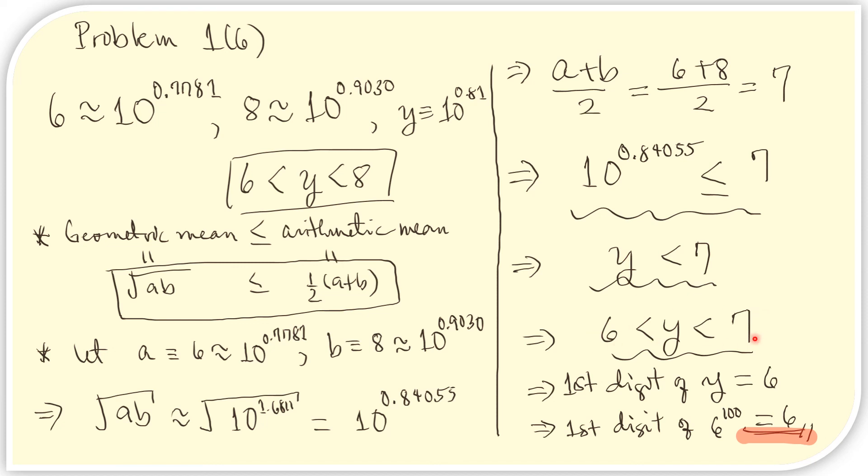And we also know that 6 is less than y, so we obtain this inequality. Now, we can be sure that y is between 6 and 7. And therefore, the first digit of y should be 6. And thus, the first digit of 6 to the 100 is also 6.